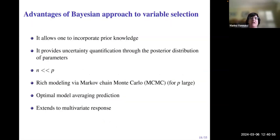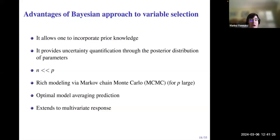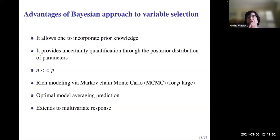In summary, the spike and slab approach to variable selection is a Bayesian approach that allows incorporating prior knowledge — which will be very evident in the applications. It provides uncertainty quantification through the posterior distribution. It works well for all settings, both n greater than p and n smaller than p. We can handle large p situations with this rich class of stochastic search and MCMC methods. We can do optimal prediction by model averaging. And it extends nicely to the multivariate response setting with multiple responses, which was my postdoctoral work. I'll now take a few questions.